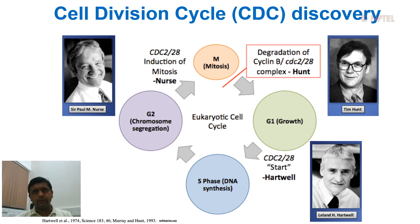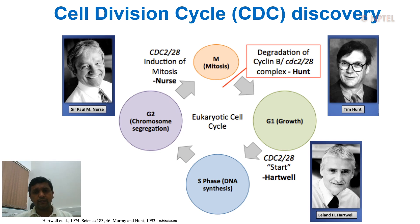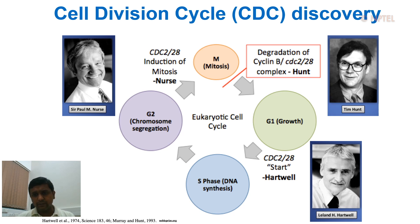Before moving on, I'd like to give a brief history of how we came to understand cell division. In the early 1970s and 80s, three great scientists across the world made a major discovery in the field of the cell cycle. They identified cell division cycle genes, which led to our understanding of the cell cycle today. Working across different model systems, they identified a master kinase — cyclin-dependent kinase — and its regulatory subunit, cyclins. Most of this work was done by Professor Paul Nurse, Tim Hunt, and Lee Hartwell.